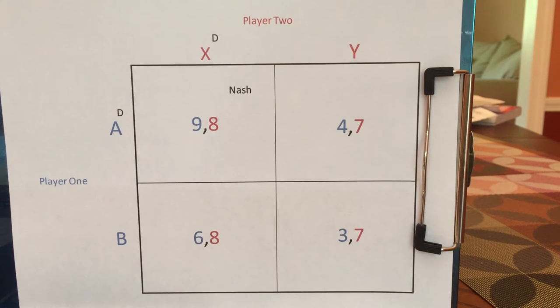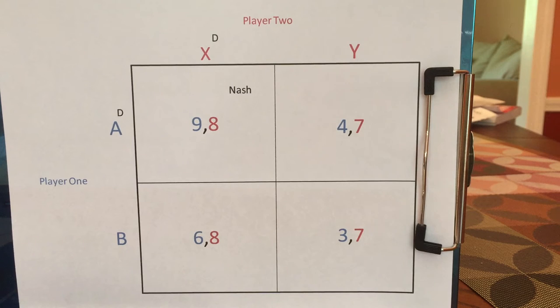Today we're going to talk about the Nash Equilibrium. The Nash Equilibrium idea was formulated by John Nash, who is the subject of the movie A Beautiful Mind.